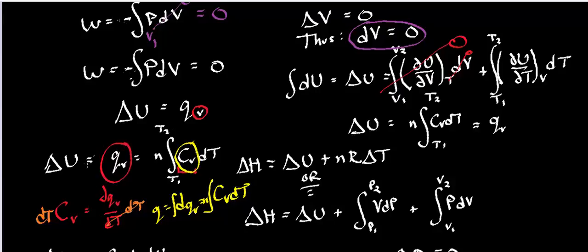So the number of moles times Cv times dT integrated from T1 to T2, that's the heat at constant volume. Now, because work was zero and the heat is equal to the internal energy, we can also say that the internal energy is equal to this integral, n times the integral of Cv dT from T1 to T2. So that knocks out the work, the internal energy, and the heat.